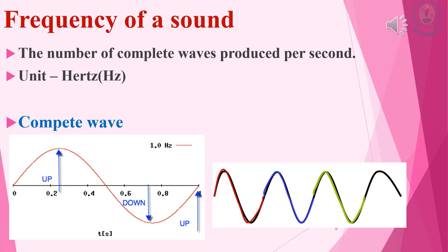The periodic movement of particles at regular intervals produces sound waves. At time zero, the displacement of the particle is zero. With time, the displacement of the particle increases and takes a maximum positive value. After that, the displacement starts to decrease, becomes zero, then increases in the negative direction, taking a maximum negative value, and then becomes zero again. This type of motion of the particle is called one complete wave.